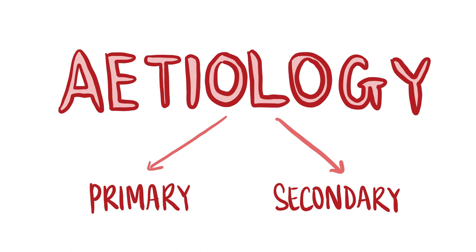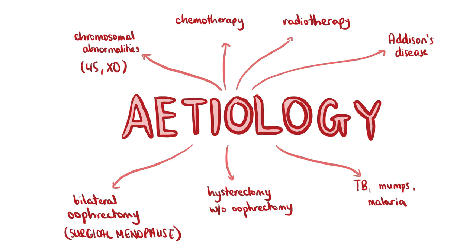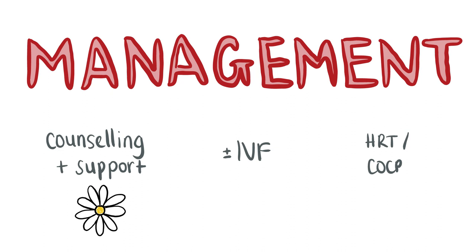We can divide the causes of premature ovarian failure into two categories: primary, which includes genetic factors such as autoimmune disease, enzyme deficiencies and chromosomal abnormalities such as 45XO — also known as Turner's syndrome — and secondary or acquired factors, which include chemotherapy and radiotherapy, bilateral oophorectomy, hysterectomy without oophorectomy and infection. Premature ovarian failure is managed by giving the patient back-to-back combined oral contraceptive pill packs, or HRT, until she has reached the natural age of menopause, which is around 52. IVF must be offered if the patient wants to conceive, and counselling and support groups such as the DAISY network and Fertility Friends can also be very beneficial.